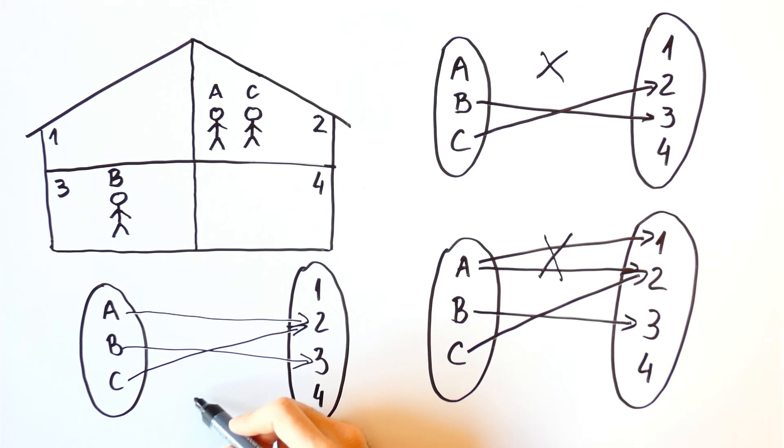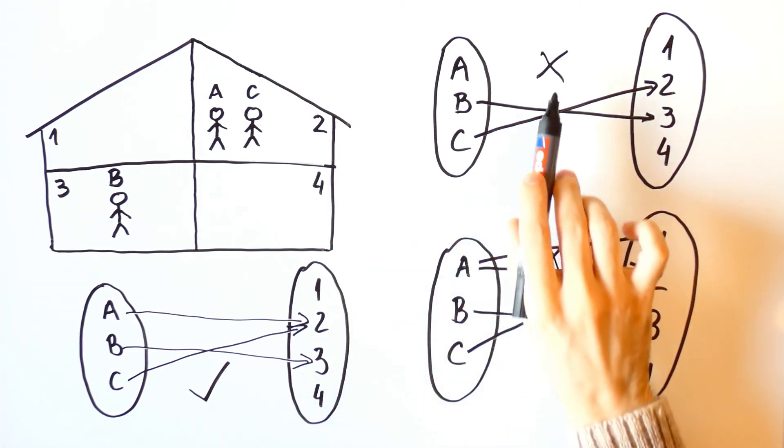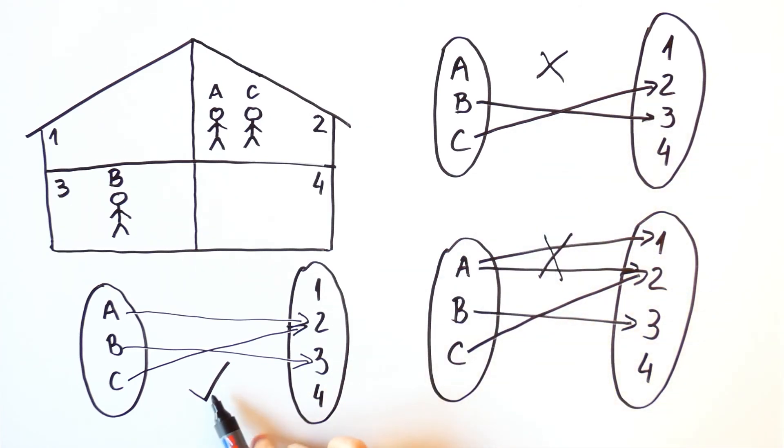And in a nutshell, that is a function. We can replace the set of people and the set of rooms with some other two sets. And if we apply these rules, we'll get a function. But we'll leave that for another video.